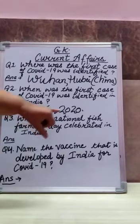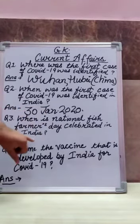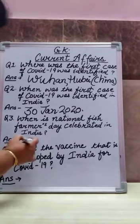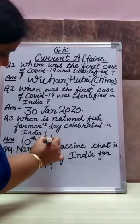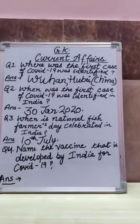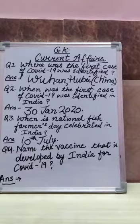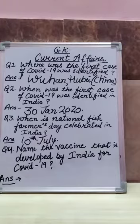Question number three: When is National Fish Farmers Day celebrated in India? Your answer is 10th July. This day is celebrated in the memory of well-known scientist Dr. H.L. Chaudhary, who was a famous scientist in fish breeding.